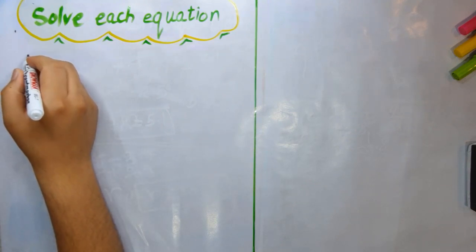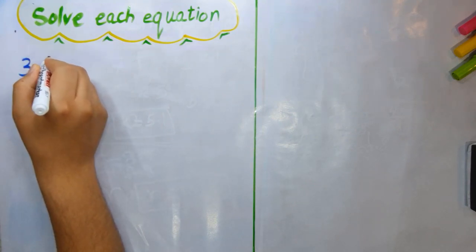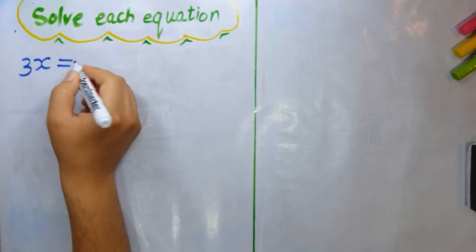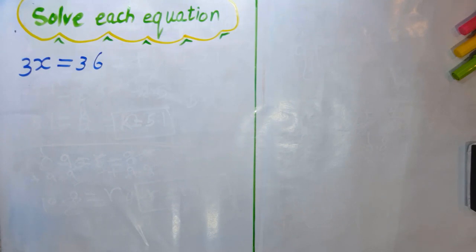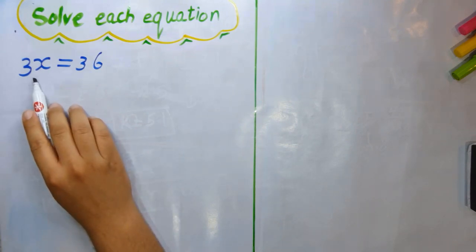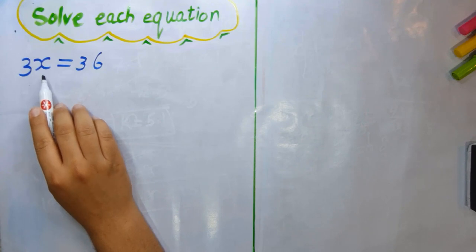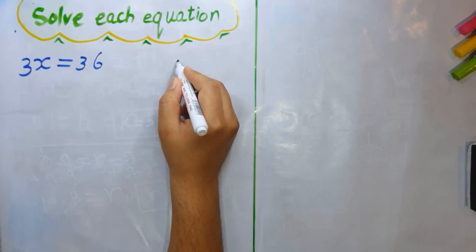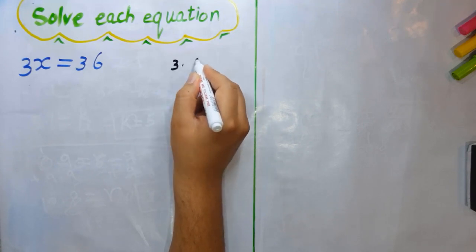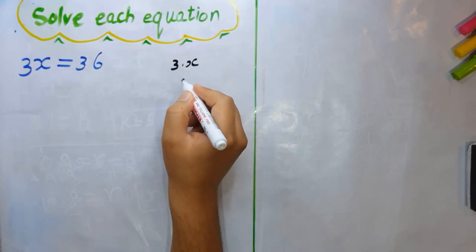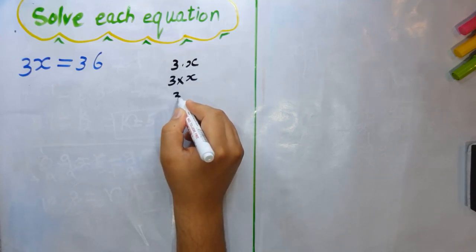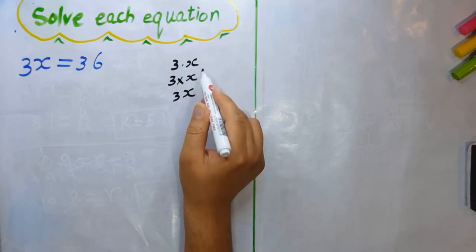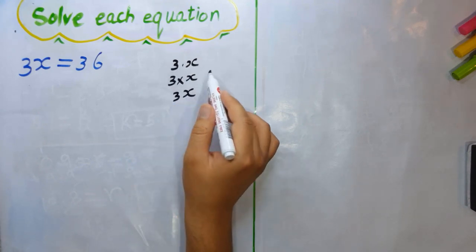The first example is 3x = 36. The notation '3x' means 3 multiply x. We can write it as 3·x, 3×x, or 3x — all of them mean 3 multiplied by x.